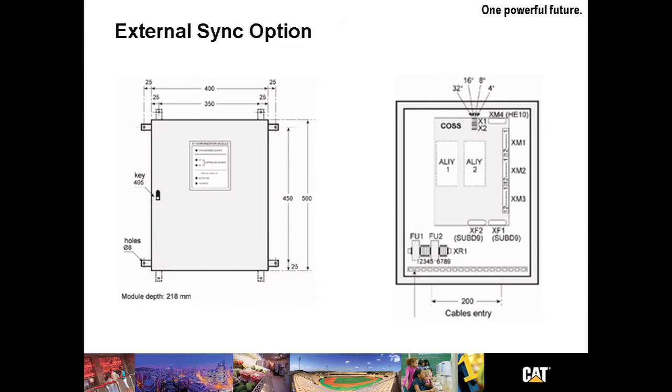The external sync option is not paralleling. It's an important differentiation here. The external sync option allows the UPS to remain synchronized with an external source. It could be another UPS, utility or even a generator set.